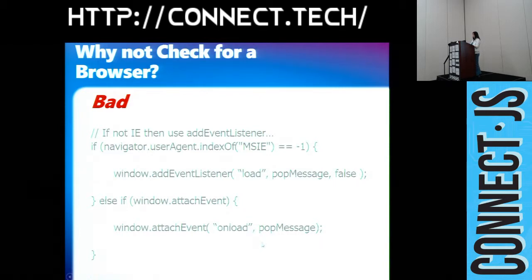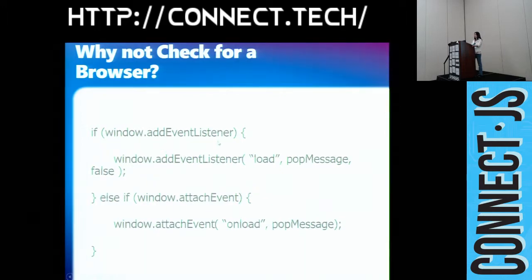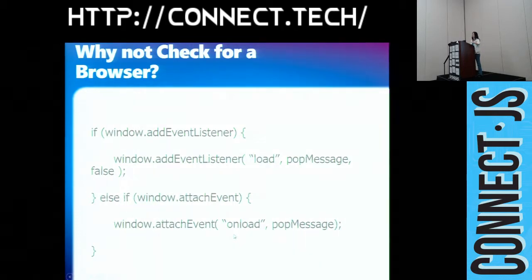Here's a much better logic: instead of checking what browser you're using, you say, 'if the browser supports addEventListener, I do this; if it supports attachEvent, I do something else.' This distinguishes whether the browser supports a particular feature — it's not browser detection, it's feature detection. See the difference?